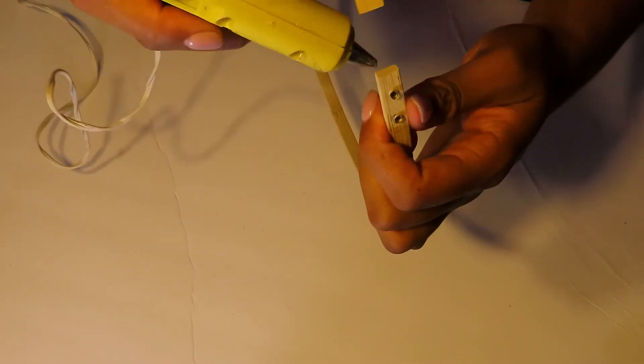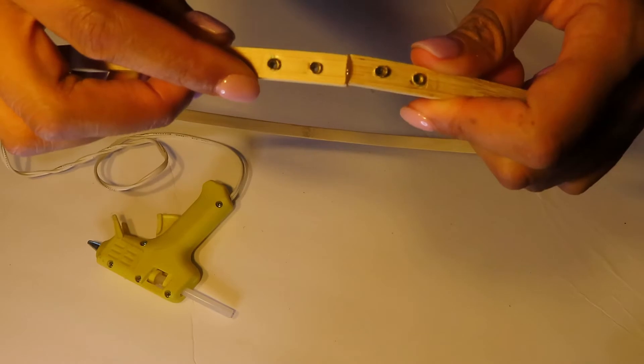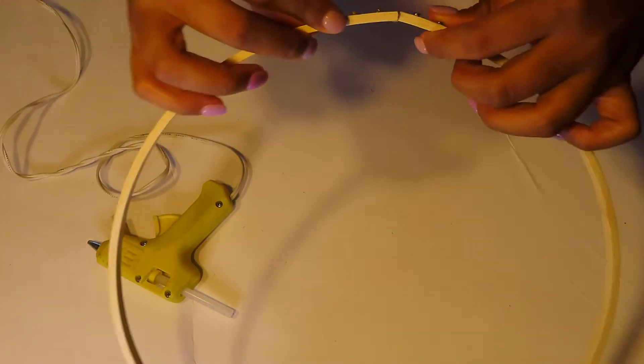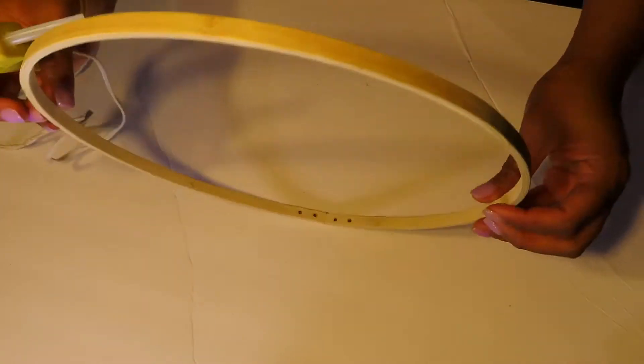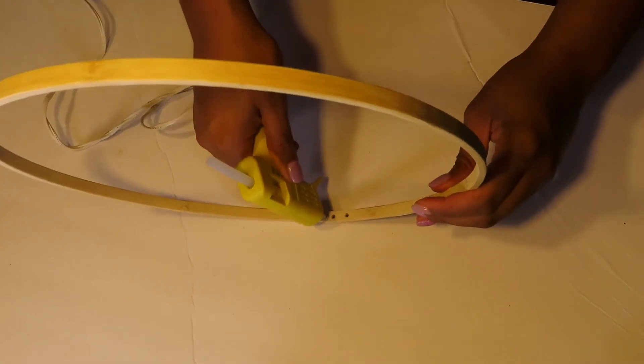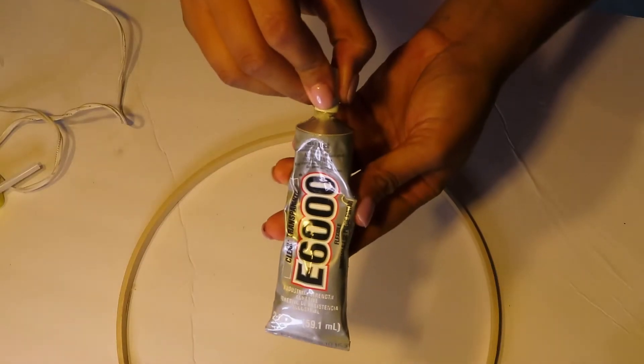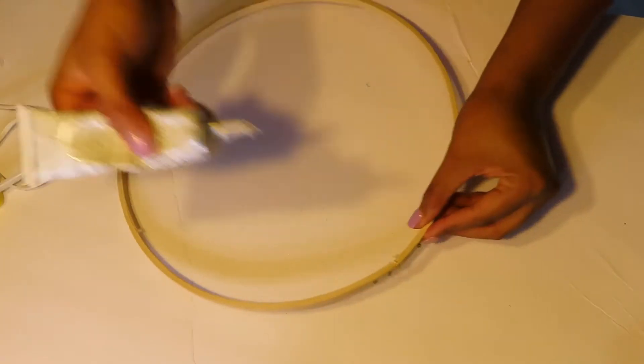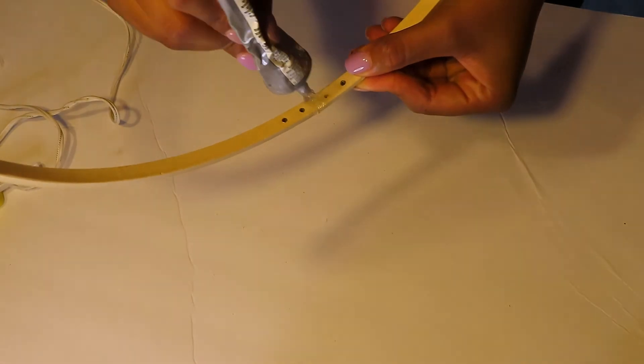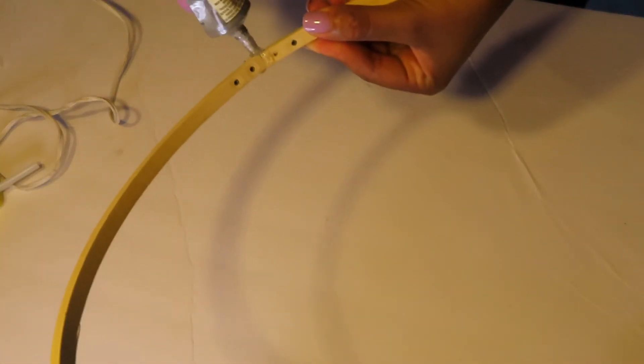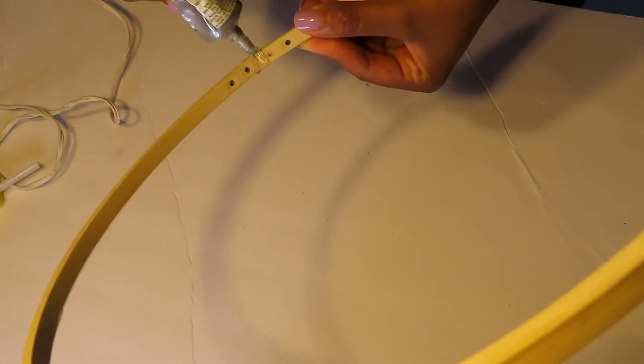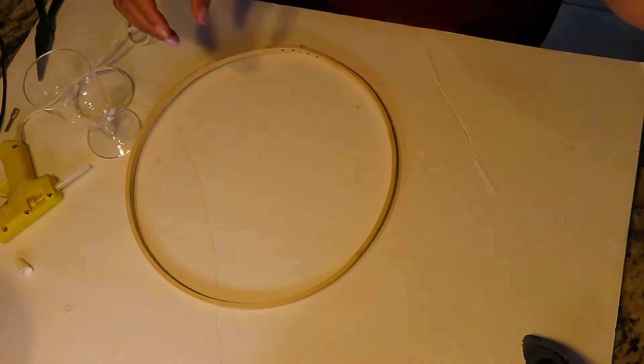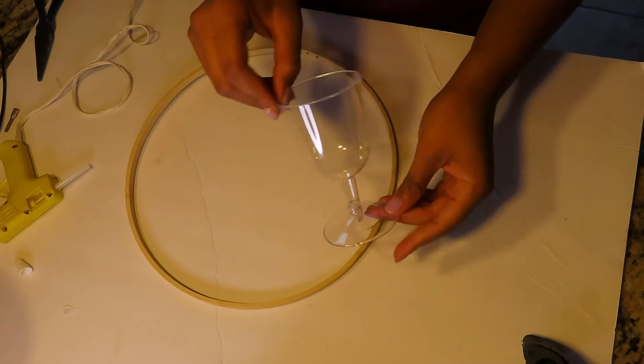Once that was finished, I made sure to put some hot glue with my hot glue gun and piece together those two sides. I also took the E6000 just to give it a little extra reinforcement.